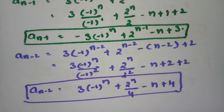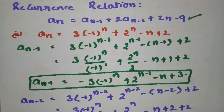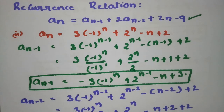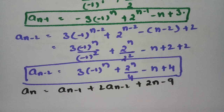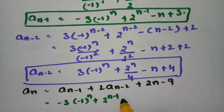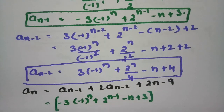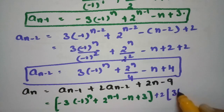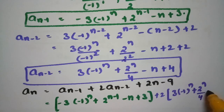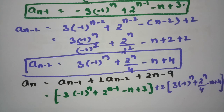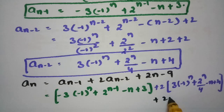Now according to the recurrence relation, An = An-1 + 2·An-2 + 2n - 9. Substituting An-1 = -3·(-1)^n · 2^(n-1) - n + 3, and 2 times An-2 = 2·(3·(-1)^n · 2^n/4 - n + 4), plus 2n - 9.